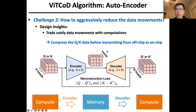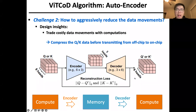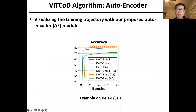The second challenge is how to aggressively reduce data movements. Our design insight is to replace costly data movements with cheaper computations. Based on the observation that there is redundancy among attention heads, we can compress the QK vectors before transmitting them back and forth. To this end, we insert an encoder to compress — for example, from 6 heads to 3 heads — and a decoder to reconstruct back to 6 heads. The reconstructed heads and the original heads are then enforced to be the same with a reconstruction loss. After inserting the modules, we fine-tune the whole model for recovered accuracy. We visualize the accuracy trajectory along the tuning process, where the dashed line denotes the dense VIT's accuracy and the solid line represents the fine-tuning process. We can see that accuracy is fully recovered for all three VIT models.